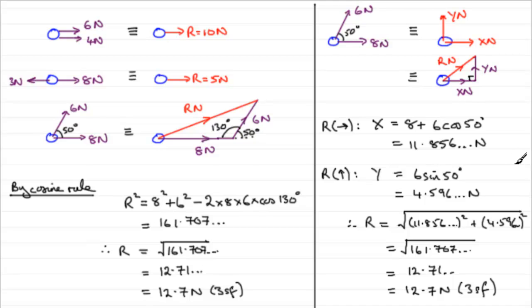I hope that's given you some idea of how we can handle problems where we've got two forces inclined at an angle acting on a particle. You can either do it by forming the vector triangle and applying the cosine rule, by scale drawing (though it's not very accurate), or by resolving. I've got a few examples coming up in the next video. We'll also look in a later video at how to handle this when we've got more than two forces, where we'll need the resolving method.